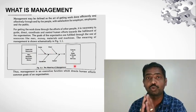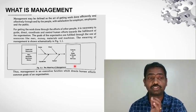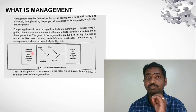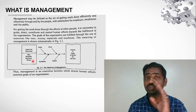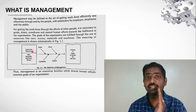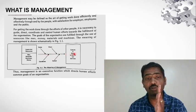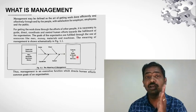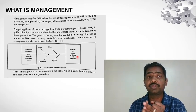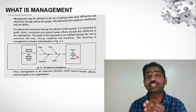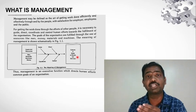So, the management outputs — the inputs or resources are men, materials, machines, and money. Management will guide, coordinate, direct, and control these resources. The final output will be the desired product — an efficient and effective product — along with public satisfaction, employee satisfaction, and employer satisfaction.